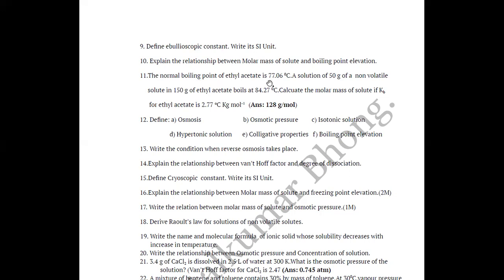Question 11: The normal boiling point of ethyl acetate is 77.06°C. A solution of 50 grams of a non-volatile solute in 50 grams of ethyl acetate boils at 84.27°C. Calculate the molar mass of the solute, given Kb for ethyl acetate is 2.77°C kg mol⁻¹. The answer is 128 grams per mole.